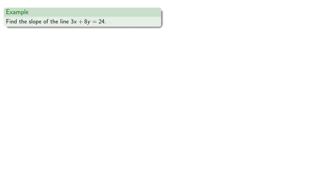For example, suppose we want to find the slope of the line 3x plus 8y equals 24. Since we don't have two points on the graph of the line, we find two points. We'll graph the line.